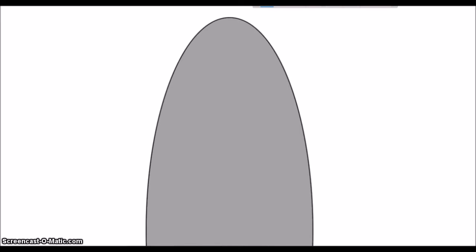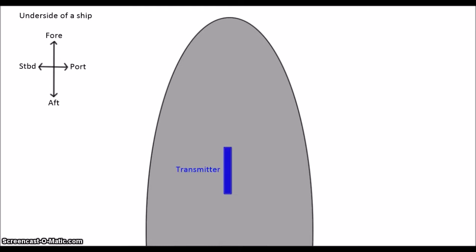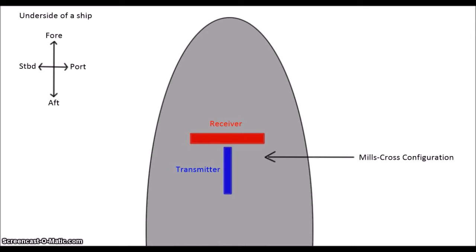But what about multi-beam sonar? Multi-beam clearly has multiple beams, but how are they formed? Well, multi-beam sonars are composed of a transmitter and a receiver. They are generally in a mills cross arrangement, where the transmitter is pointed fore-aft and the receiver is oriented across track, forming a sort of T or cross.